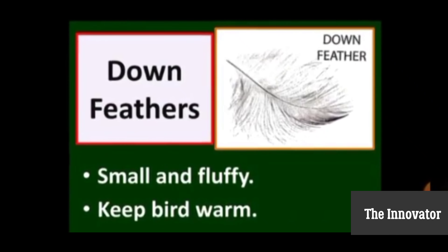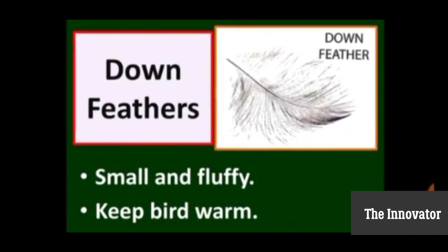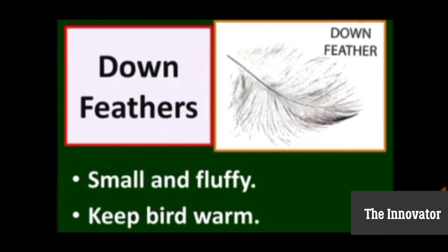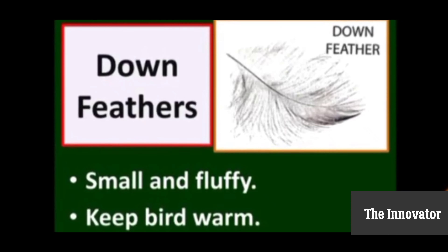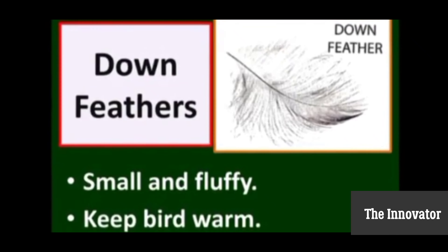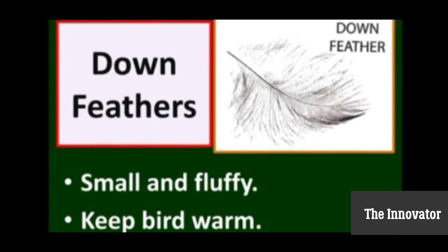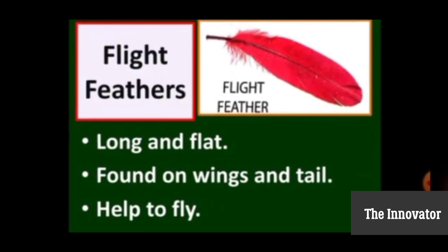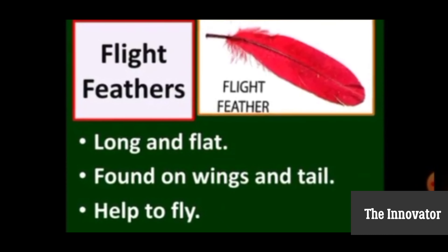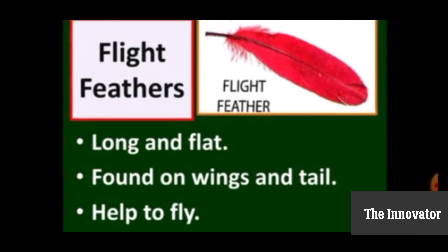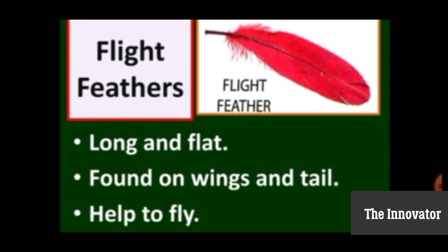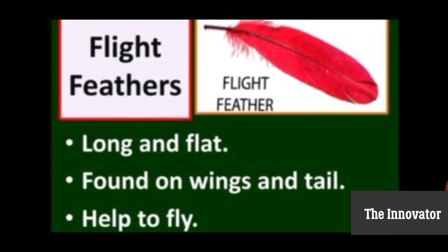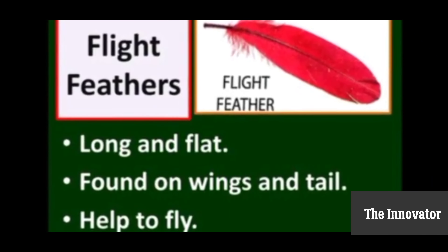Chaliyye, ab aate hai down feathers ki or. It is small and floppy, and keeps birds warm. Yeh aise feathers hai joh birds ko warm rakhate hai. Ab aate hai flight feathers ki or. Yeh lambay aur flat hoote hai. Found on wings and tails, and it helps to fly.